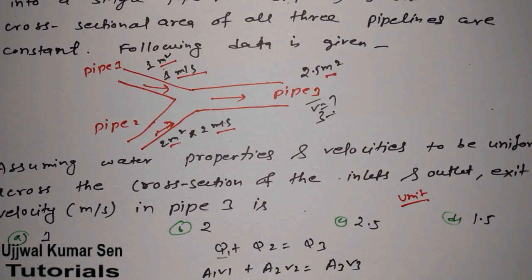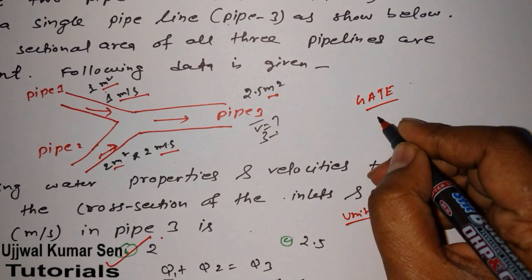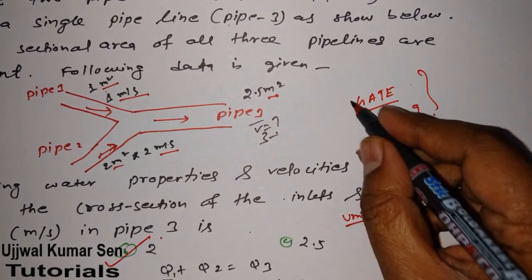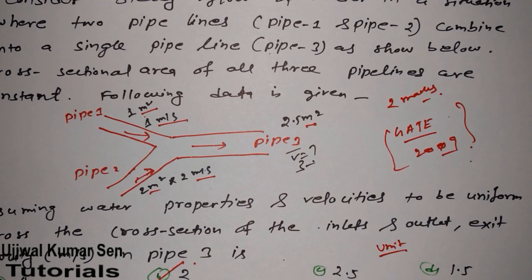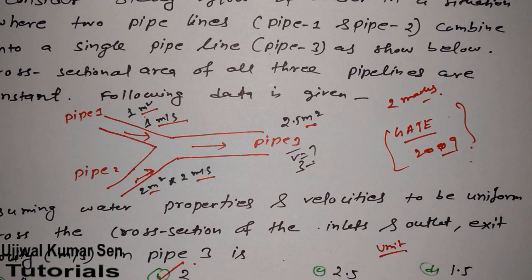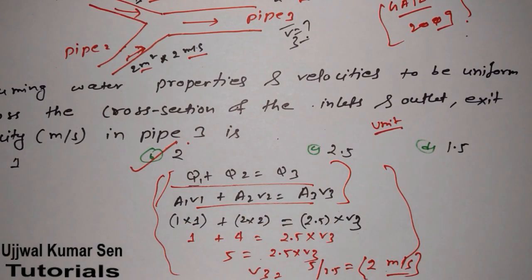The answer is two meter per second, which matches option B. This question was asked in GATE 2009 and was worth two marks. Even though I've explained each step in detail — taking about seven to eight minutes — in an actual exam, if you know these formulas, it should not take more than two to three minutes to solve. In a competitive exam you just need to find the right answer quickly.